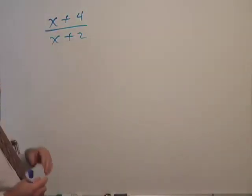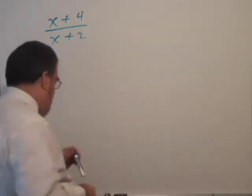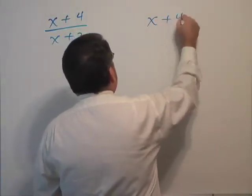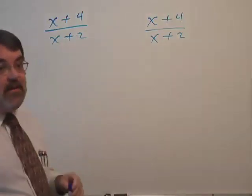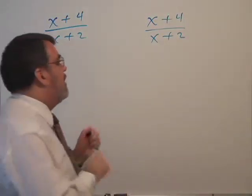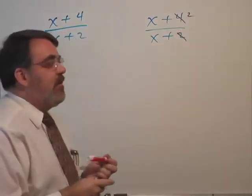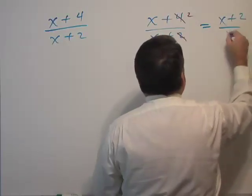Suppose I ended up with this answer to a problem, x plus four over x plus two. So let me show you something that's wrong. Suppose you decided, well, I must not be done because two divides into four. And so we cancel. And what I'll usually see is x plus two over x.